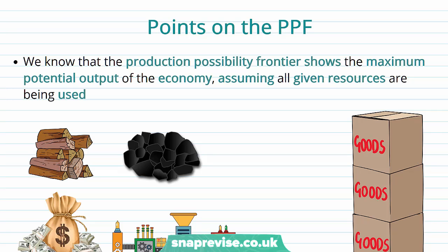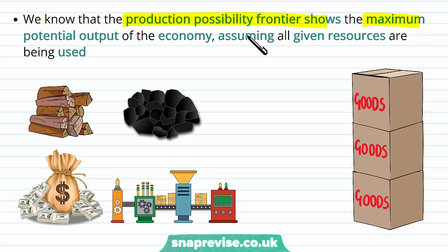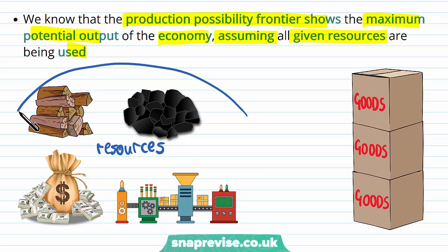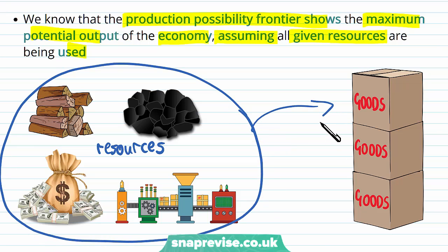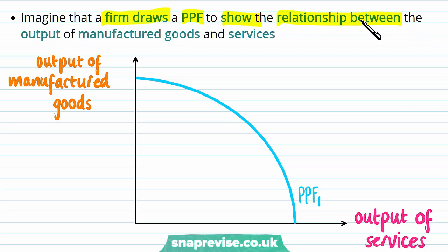Now we'll move on to understanding the PPF curve in more depth by looking at what different points on the curve mean, so we can get some insight. We know that the production possibility frontier shows the maximum potential output of the economy assuming all resources are being used. How close we are to that maximum potential is what we're interested in. Let's imagine a firm draws a PPF to show the relationship between outputs of manufactured goods and services — a downward sloping curve where we have to trade one off for the other.